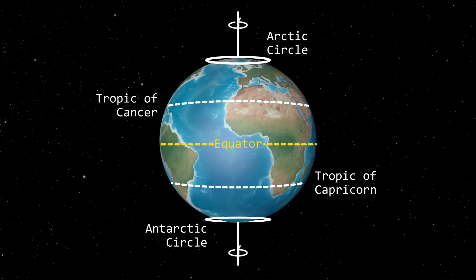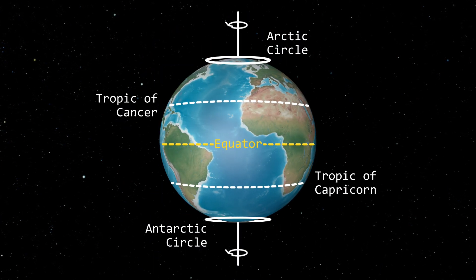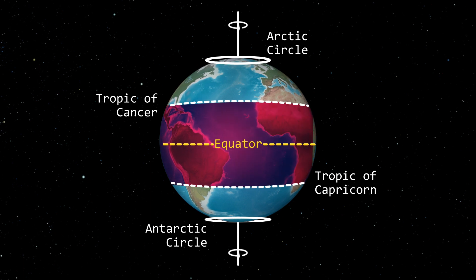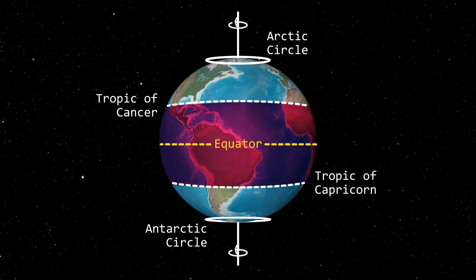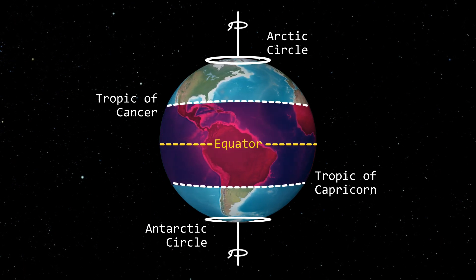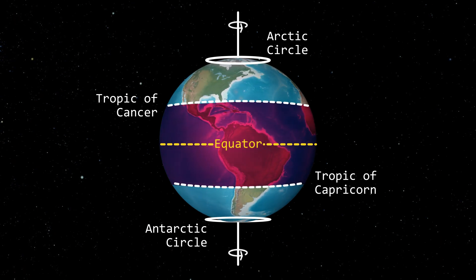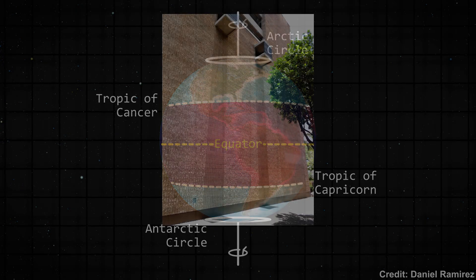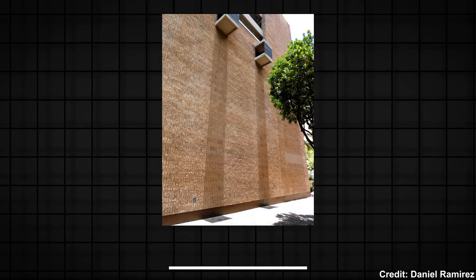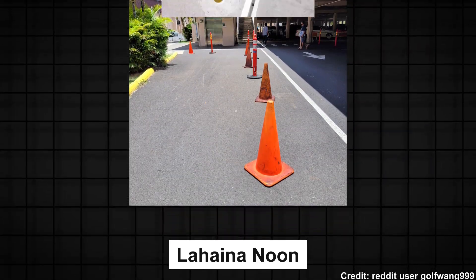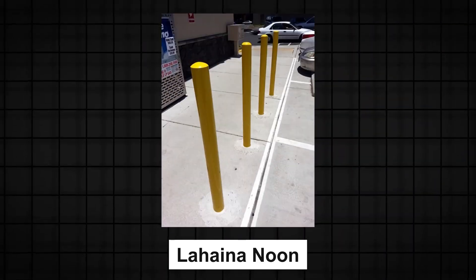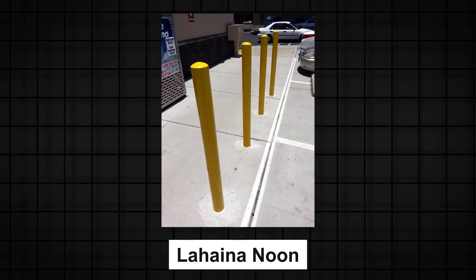The tropics are also defined by the sun. Places that are close to the equator experience the sun being perfectly overhead at noon at some time of the year. In Hawaii, this phenomenon is known as Lahaina Noon, and it can look really surreal to see things not casting a shadow in any direction — kind of makes them look like fake CGI renders.